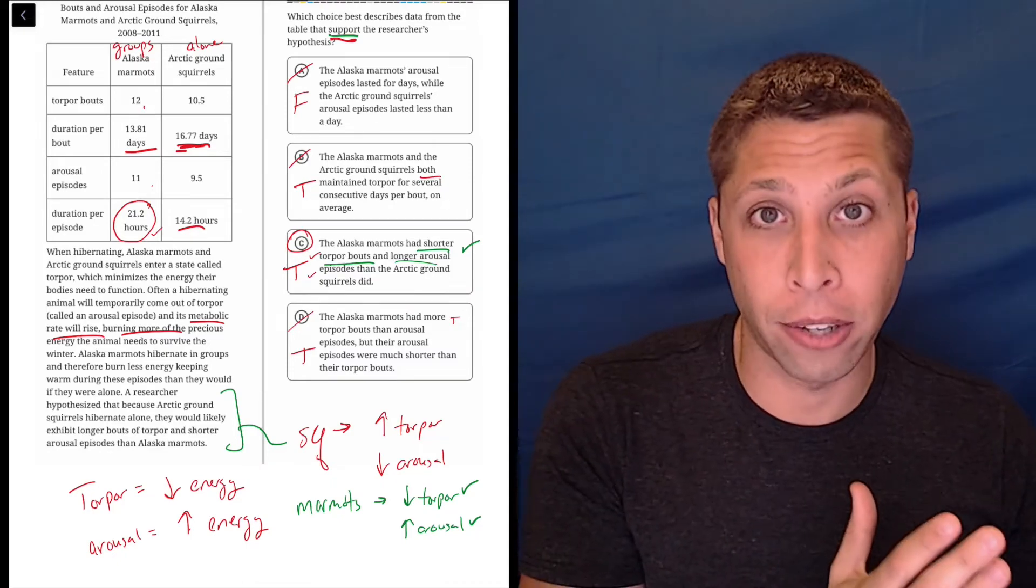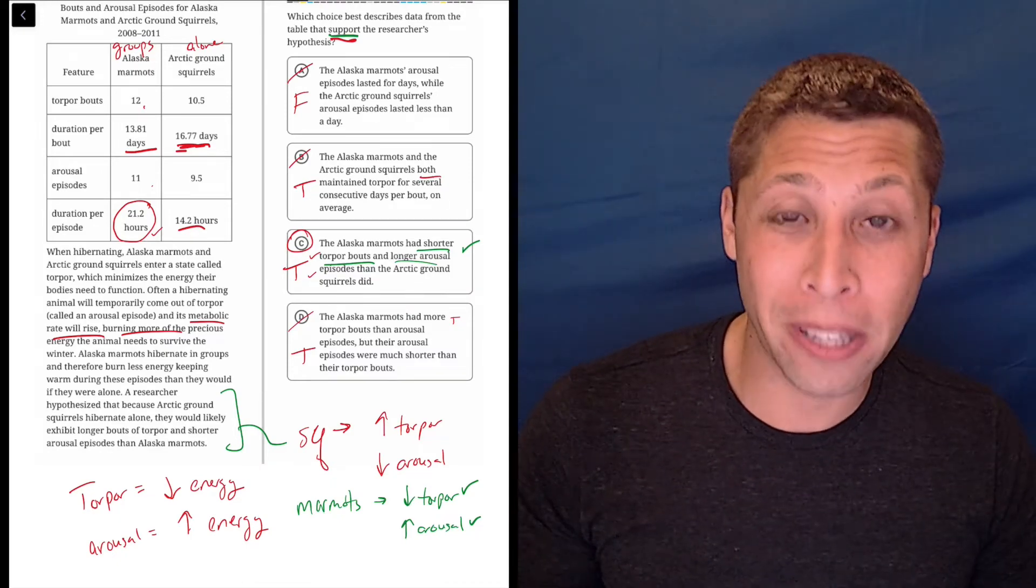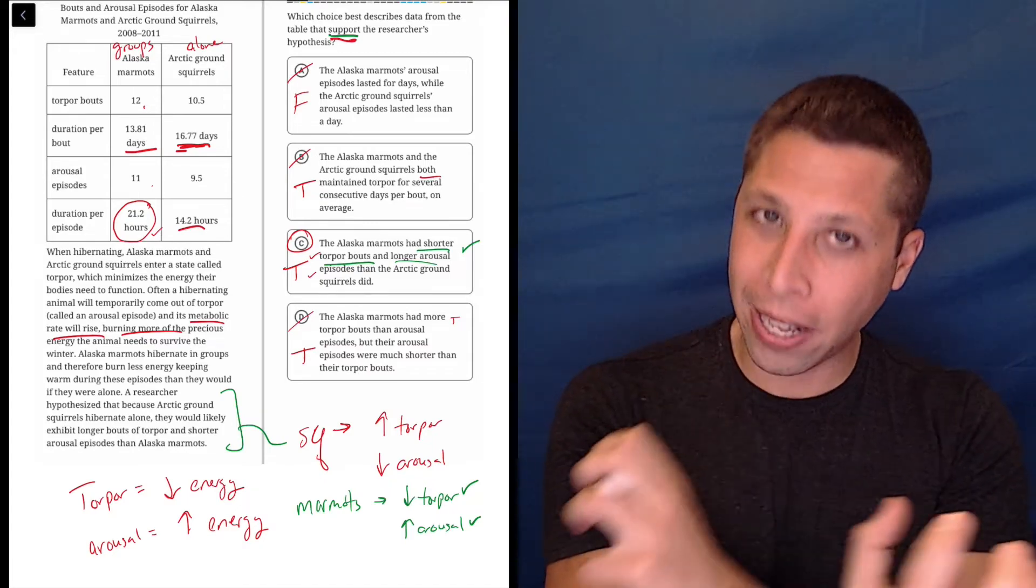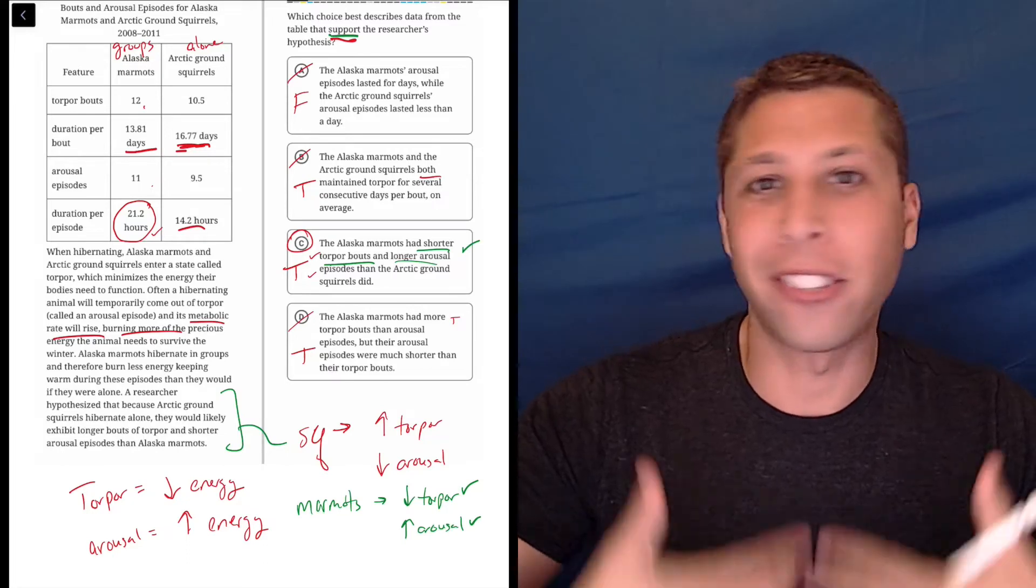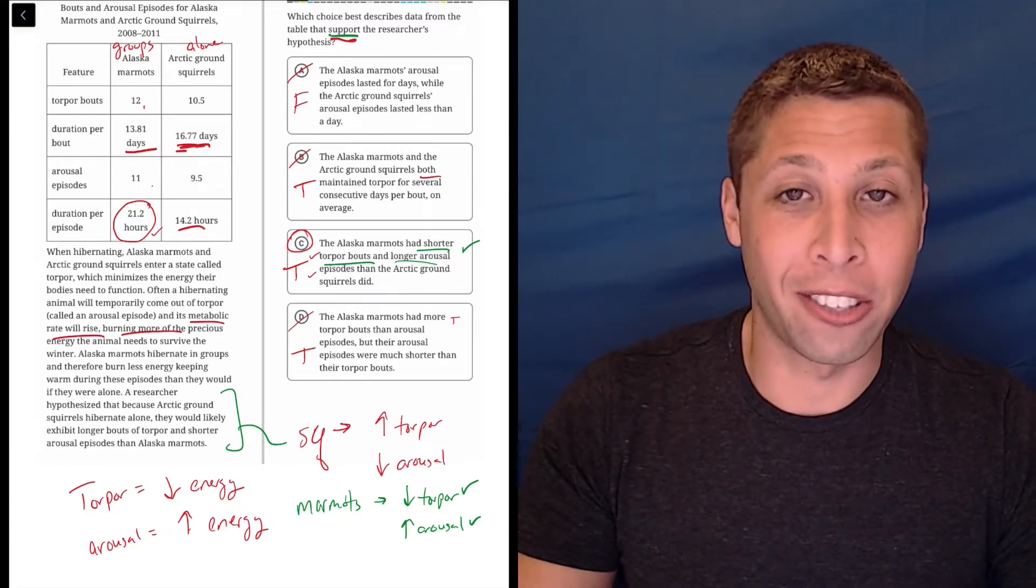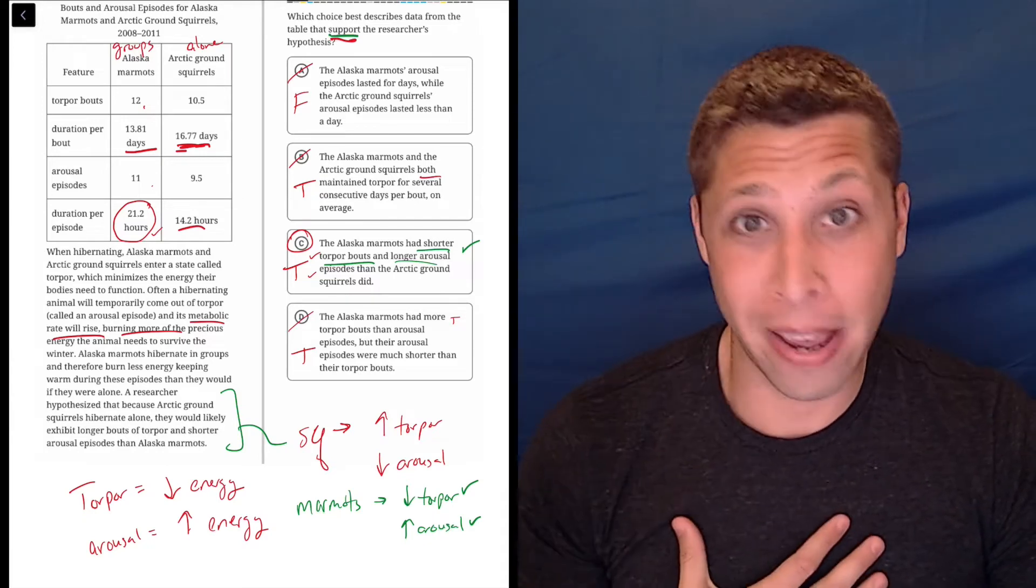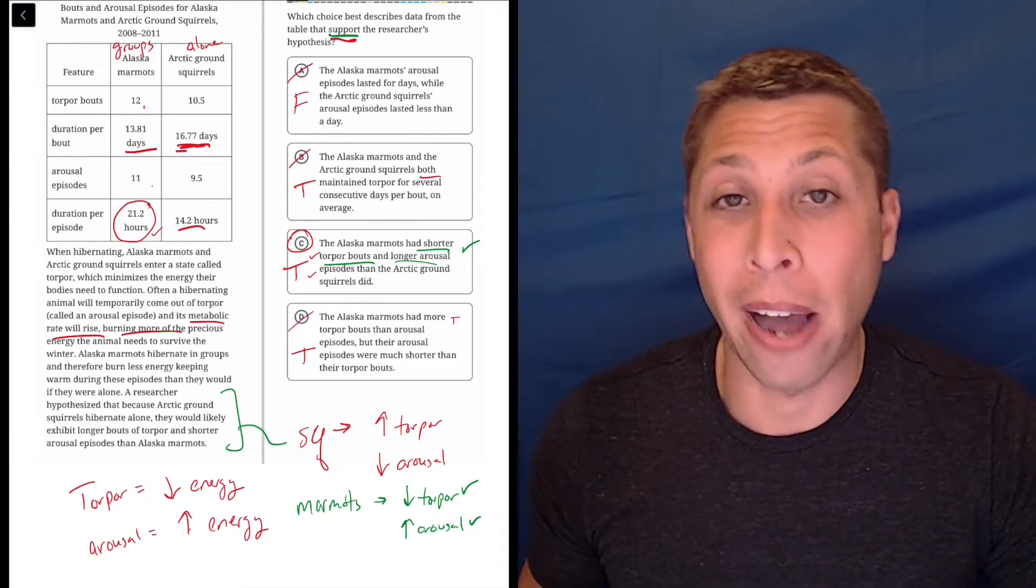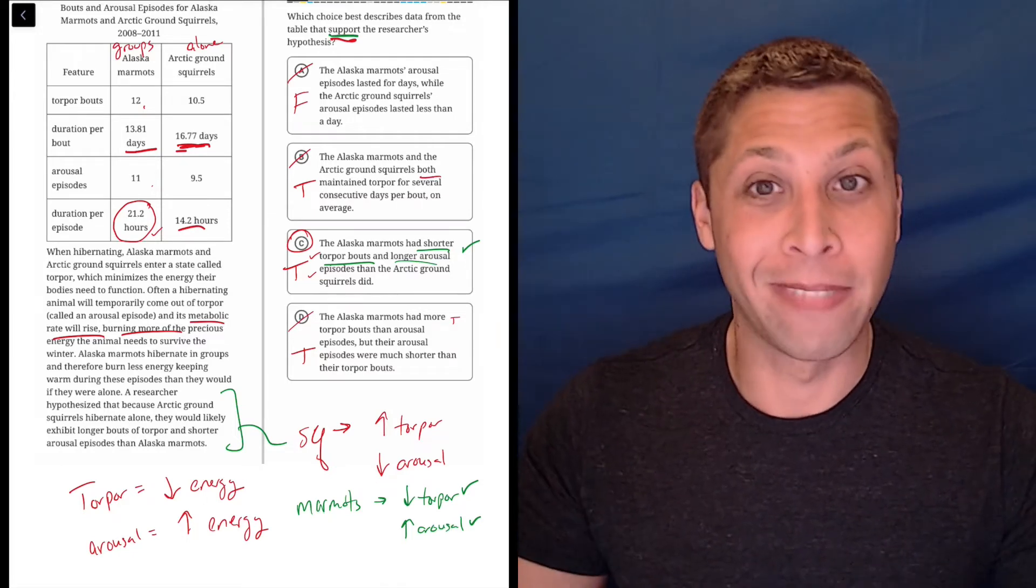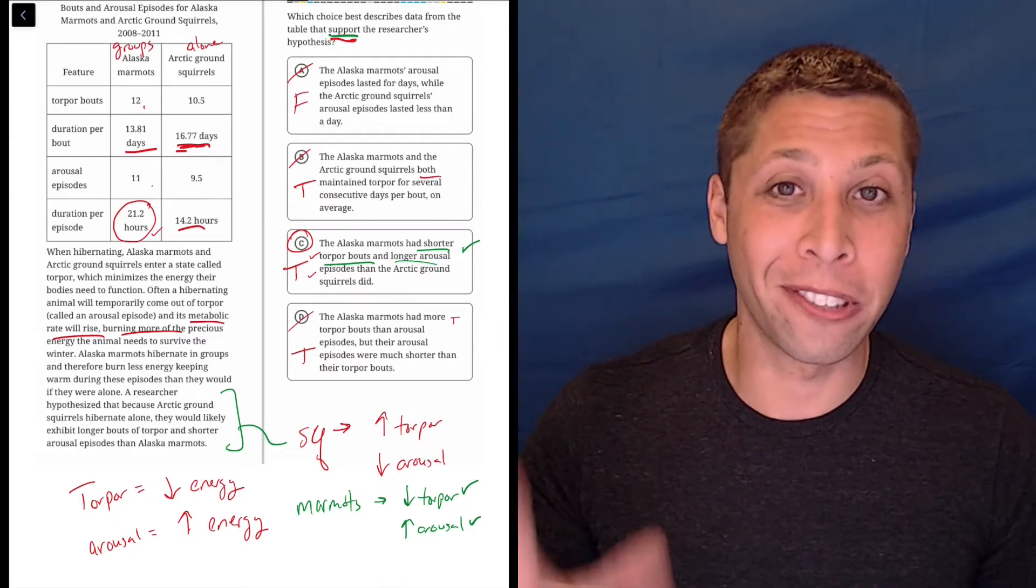What if we went in the opposite direction? And so here it's squirrels and marmots, but it's kind of the same thing. We're just taking a different perspective on the same hypothesis, idea, data, whatever you want to call it. Hopefully this makes sense to you because it's the only way that I can make sense of all this stuff about bouts and arousals and all that stuff. It's complicated, but arrows simplify it.